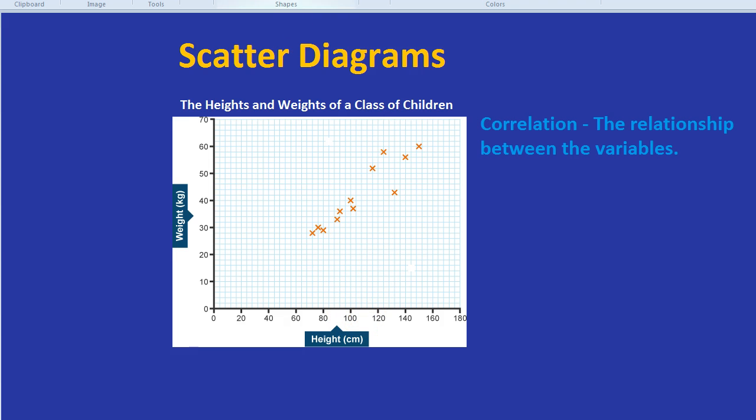This would be a positive correlation. In fact, any time the points on a scatter diagram roughly go in this direction, so from zero going up and right diagonally, that is a positive correlation.